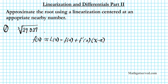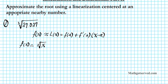So what function are we going to be using here? If we ignore the decimal components, we are going to be looking at the cube root of 27. This can be viewed as x, the variable. So our function f of x is going to be the cube root of x. We are going to find the linearization at x equals a, so f of a is going to be the cube root of a.